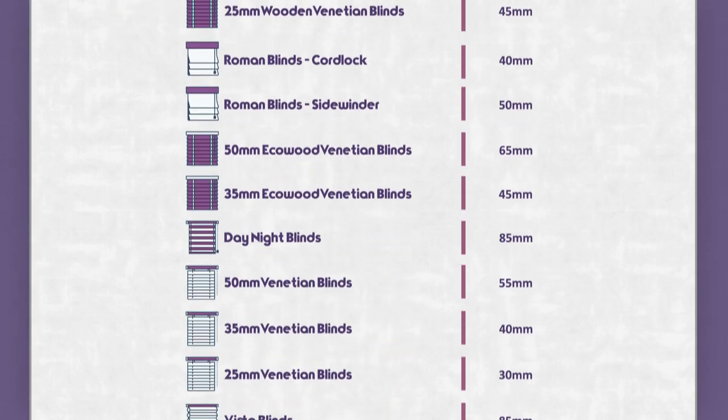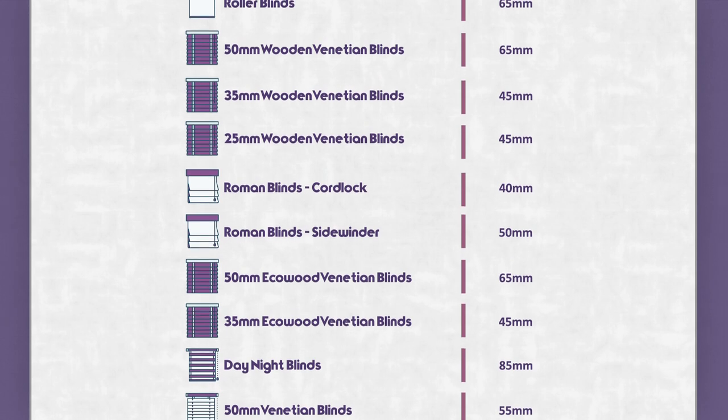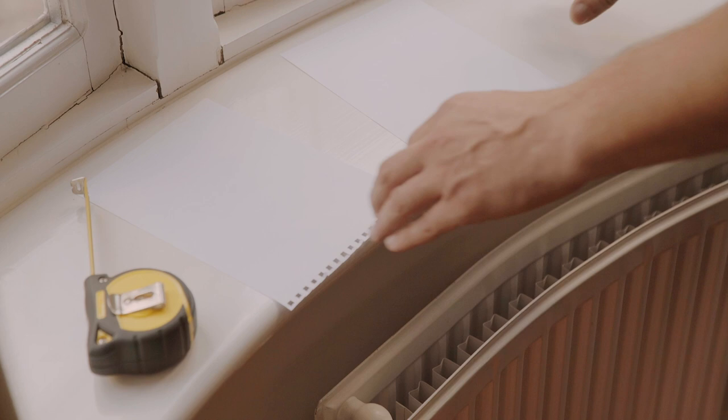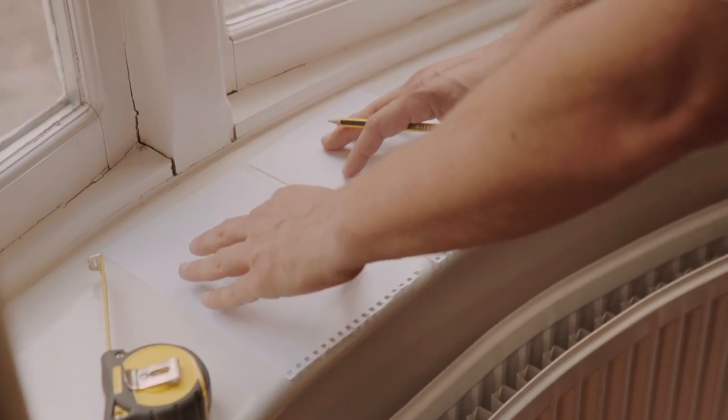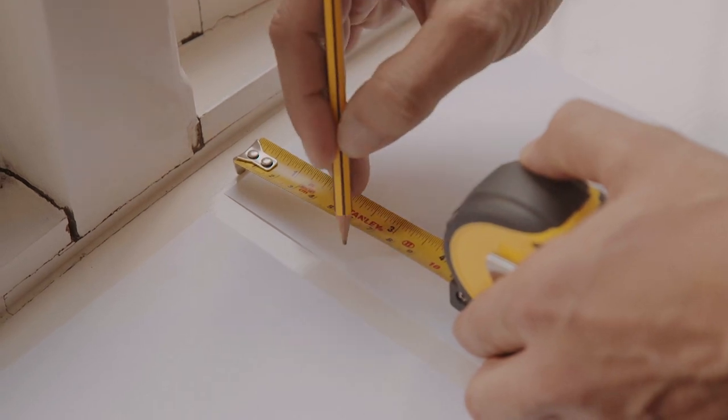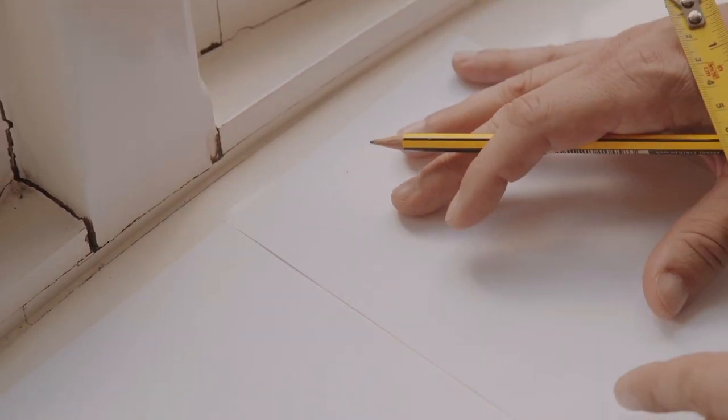Now today we're going to be measuring to fit 50mm wooden Venetian blinds. So if we look down the list, we can see that the projection for these blinds is 65mm. Now for the clever bit. Get the two pieces of paper, place them side by side, and then mark them both at the measurement for the projection of the blinds you are ordering, 65mm in our case.